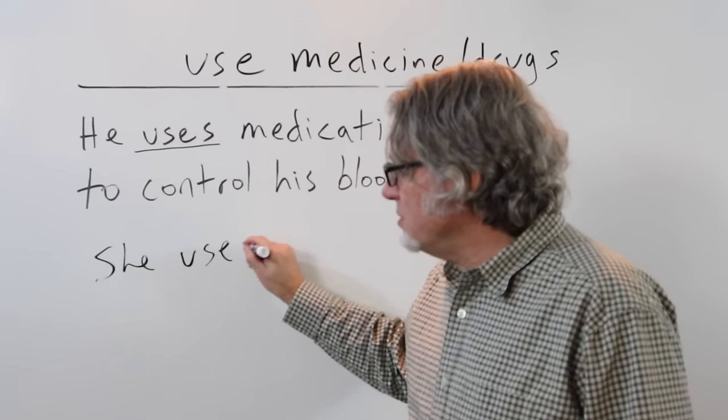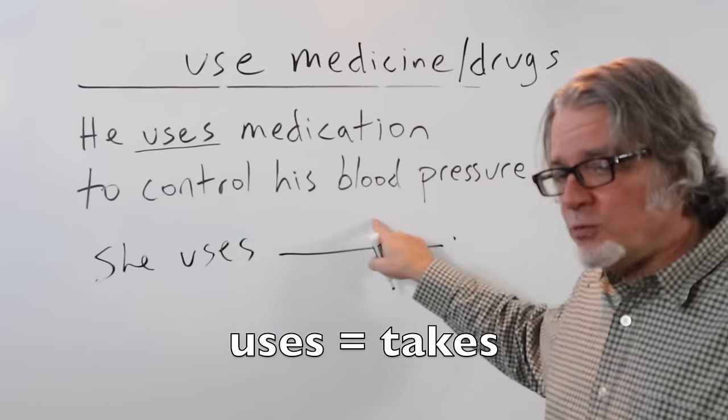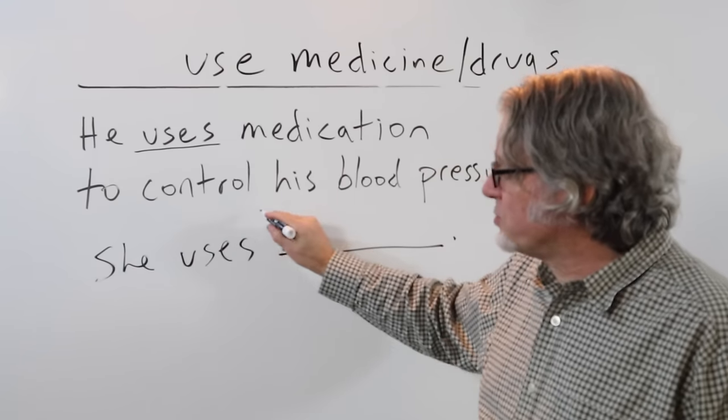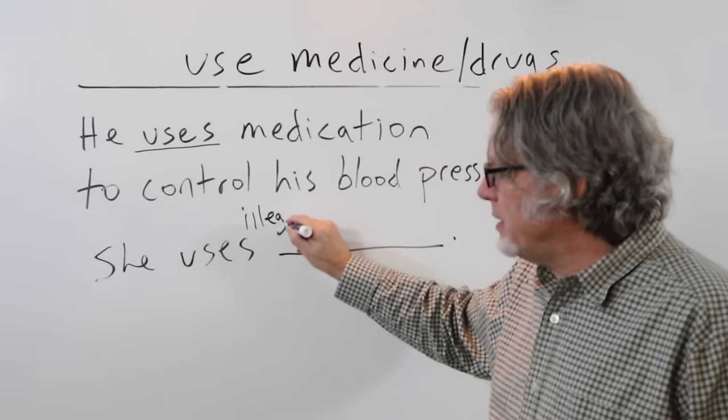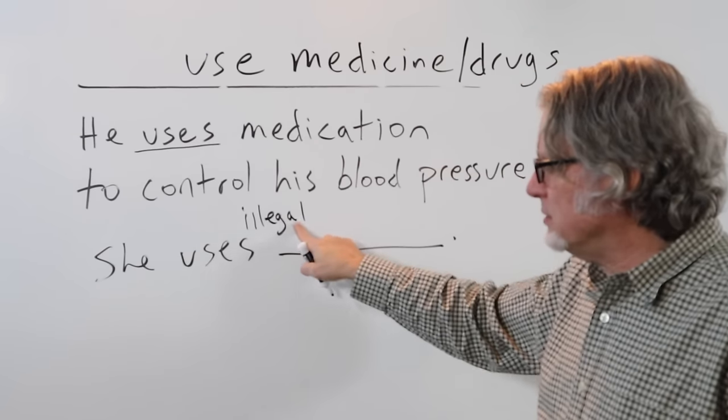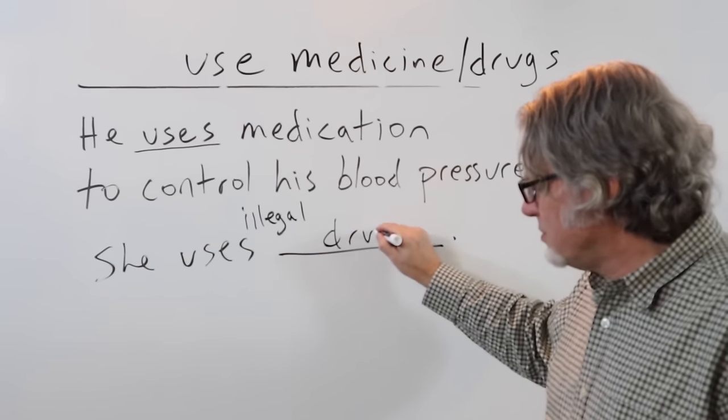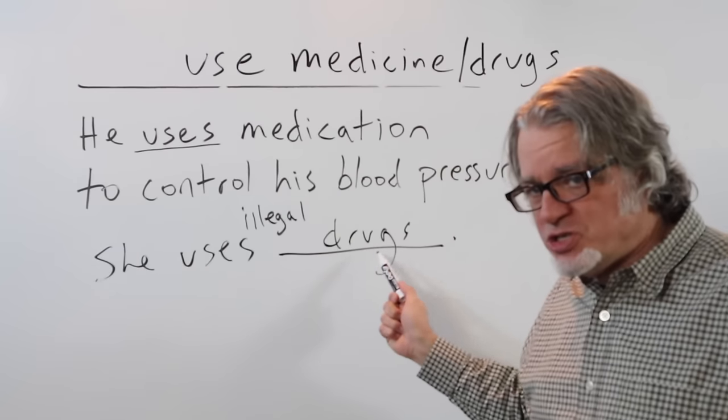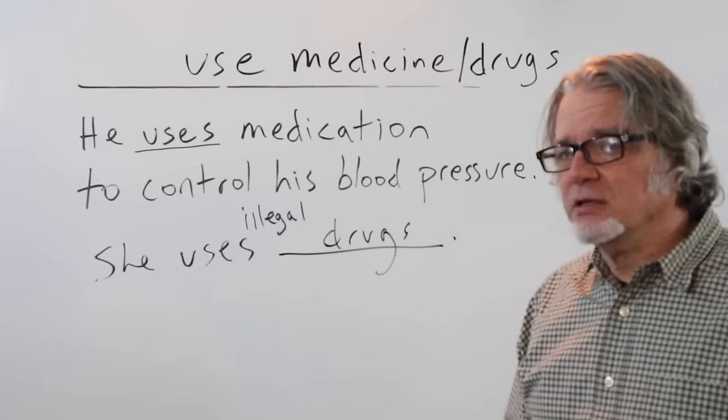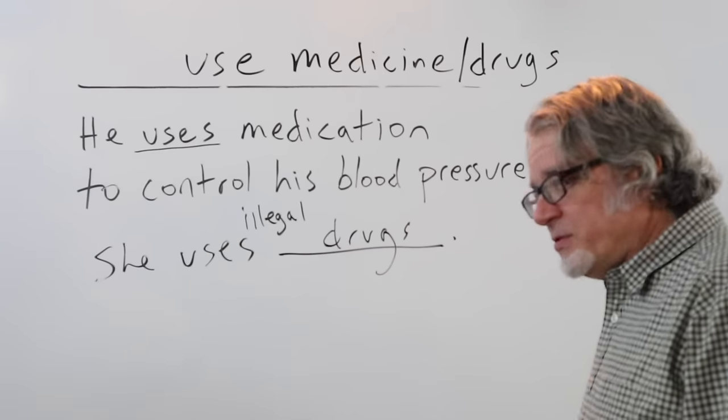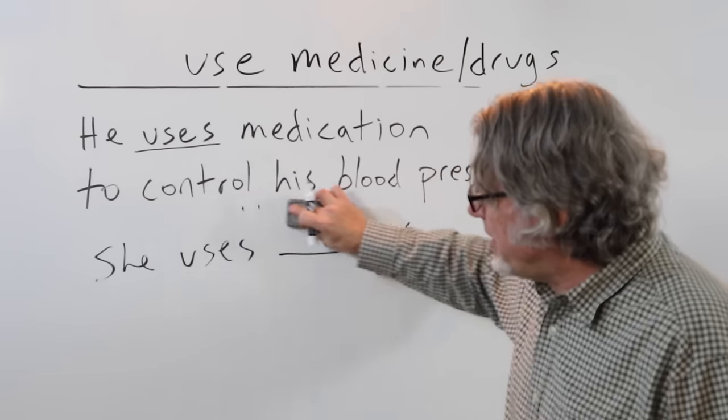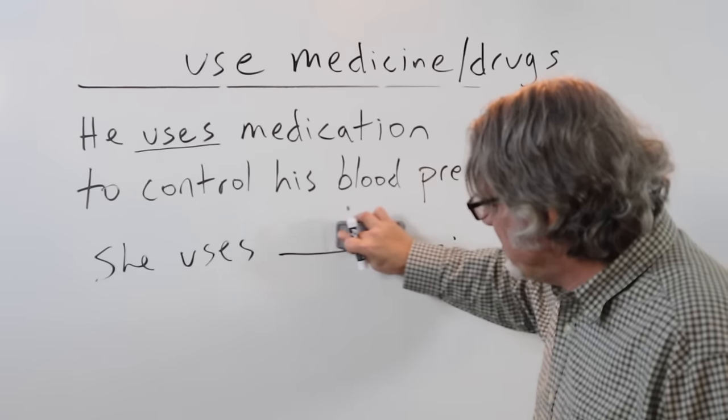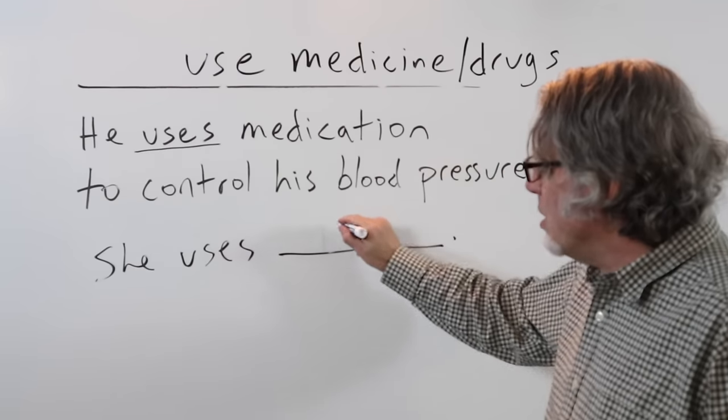She uses, and then here would be a drug. You could also put here an adjective. She uses illegal drugs. If you just talk about the category in general. Well, she uses illegal drugs, but if you want to identify a specific drug, the name of that drug would go here.